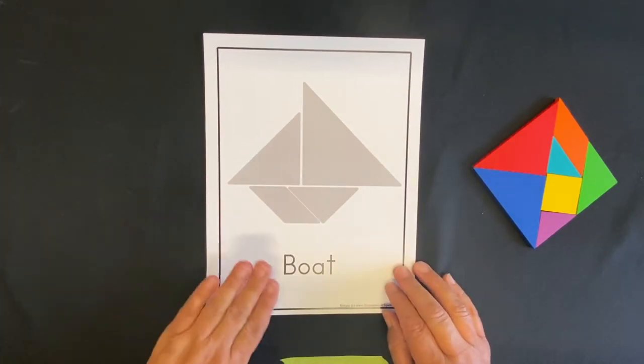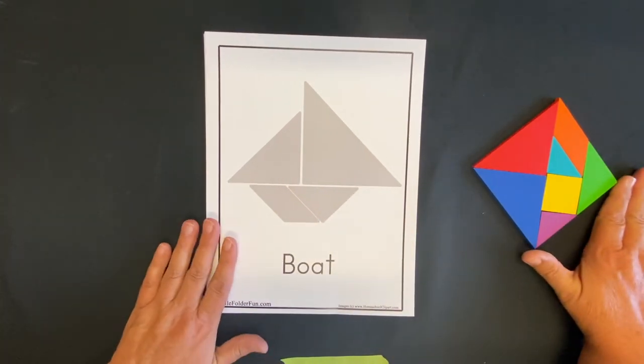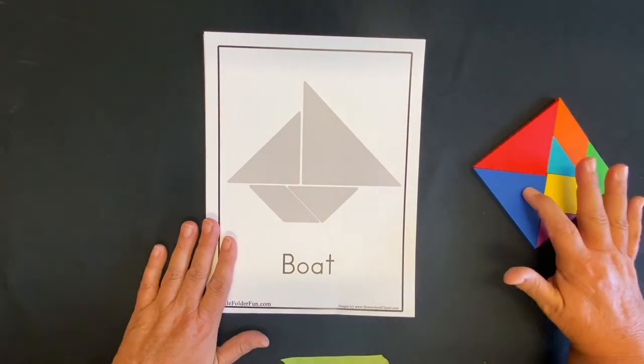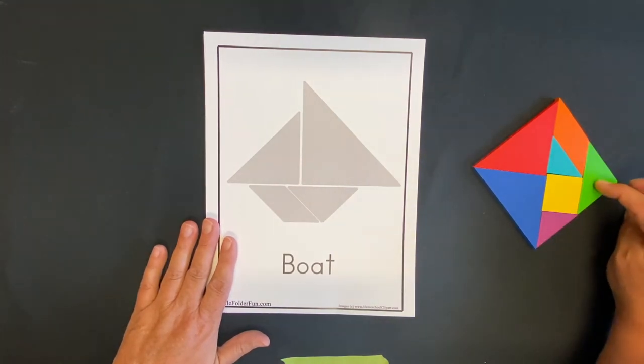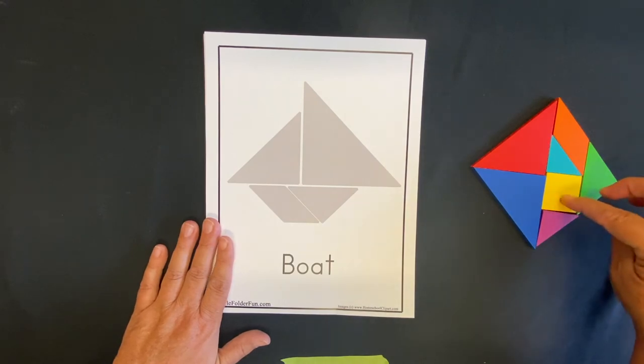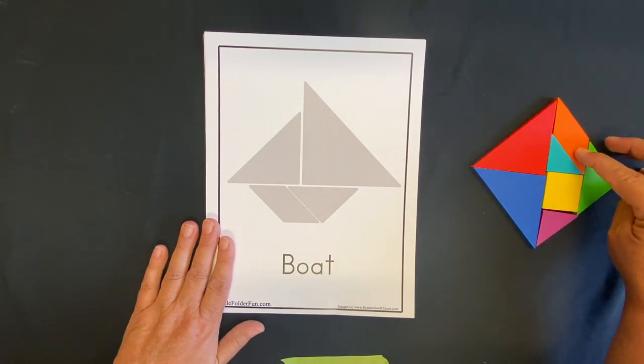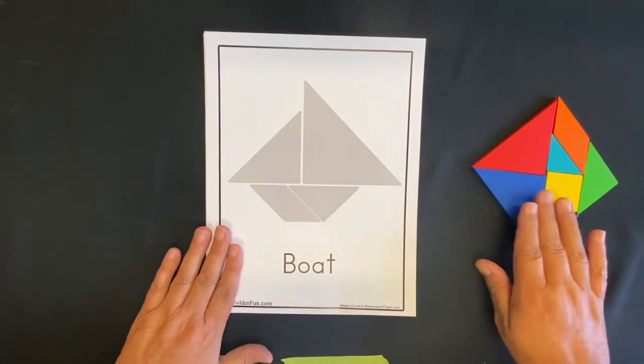First, I think we should do this really cool boat puzzle. So here's our shapes. Remember, we have two large triangles, a medium triangle, two small triangles, a square, and a parallelogram. So let's put our boat together.